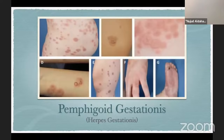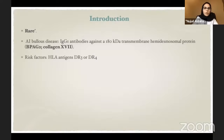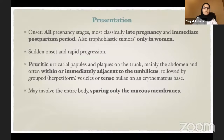Starting with pemphigoid gestationis — a rare pregnancy dermatosis. It is an autoimmune bullous disease involving IgG1 antibodies against the 180 kilodalton transmembrane hemidesmosomal protein, also known as BP antigen 2 or collagen XVII. Risk factors include HLA antigens DR3 and DR4. It can occur at all stages of pregnancy but classically occurs during late pregnancy and the immediate postpartum period. Women with trophoblastic tumors such as hydatidiform moles or choriocarcinomas also have a risk of developing this entity.